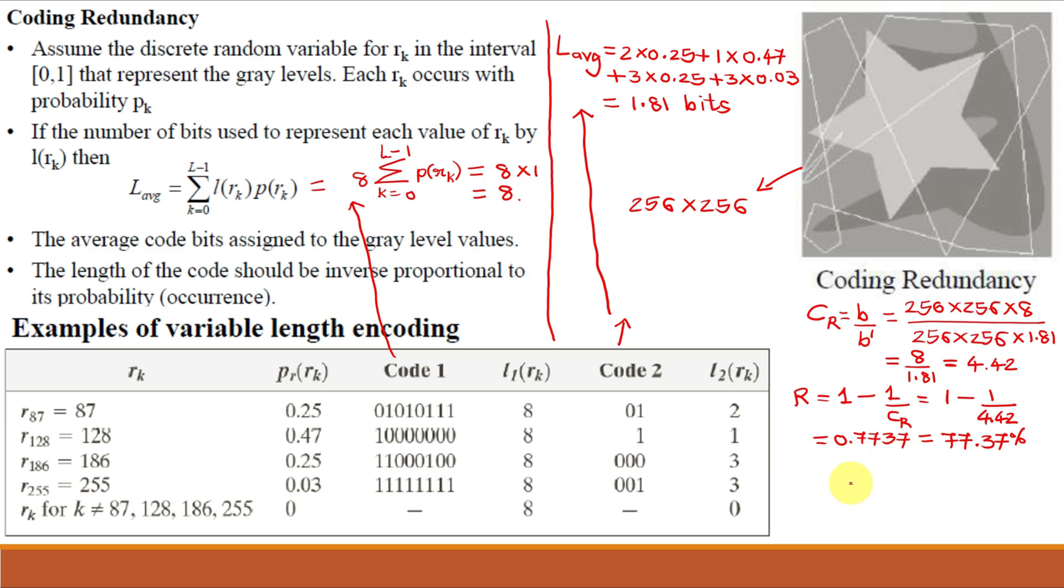This is very high redundancy or repetitive data, and hence we go for image compression. We can conclude that coding redundancy is present when the codes assigned to intensity values do not take full advantage of their probabilities of occurrence, as for code 1. When we use code 2, we get very good compression that saves our memory, time, and bandwidth.